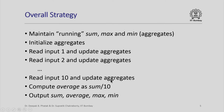That looks simple, and here is what a simple flowchart for this problem might look like. We initialize the aggregates, and then for each student we ask for their quiz 1 marks, read the input, update the aggregates, and do the same thing for the second student, third student, all the way up to the 10th student. At the end we compute the average and print out the average, sum, min, and max.